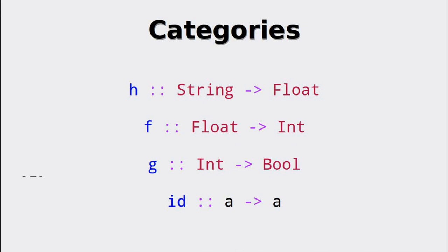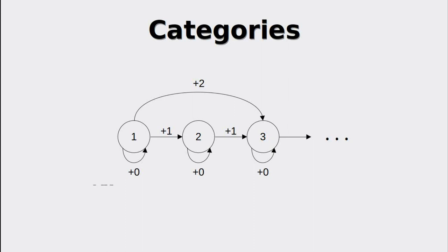Natural numbers also form a category with morphisms denoting the adding of constants to any given number. These morphisms compose by adding the constants, so plus one and plus one compose to plus two. Plus zero is the identity morphism for every single number.